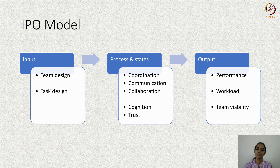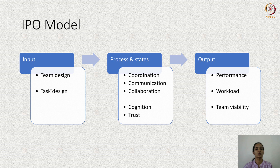The key inputs are team design and task design. Among processes, we will be looking at coordination, communication, and collaboration. Before we start an in-depth look at inputs and processes, let us look at two examples where AI becomes an integrated team member.